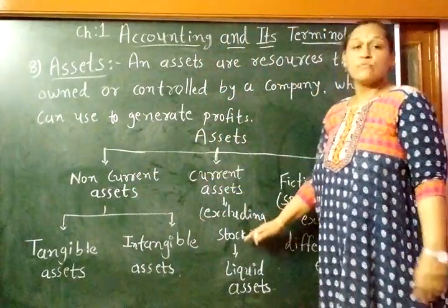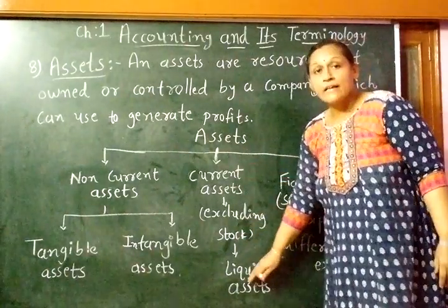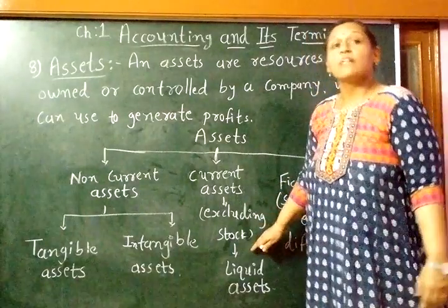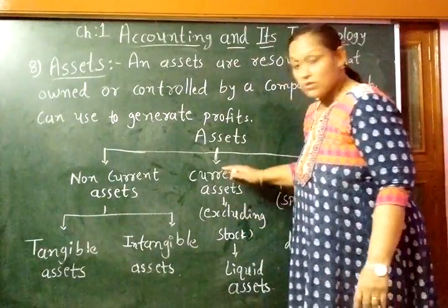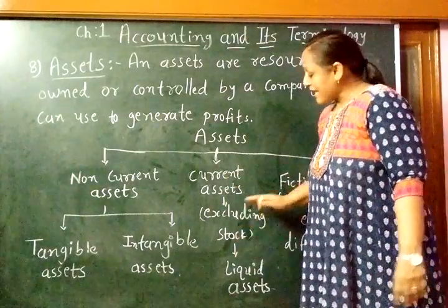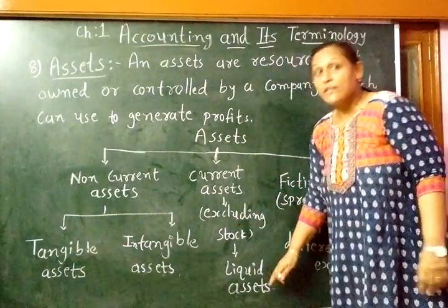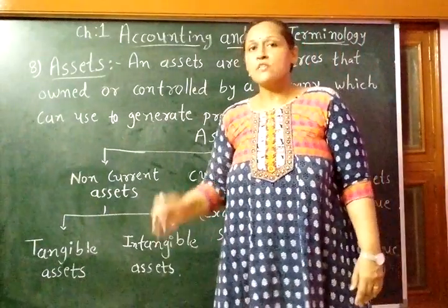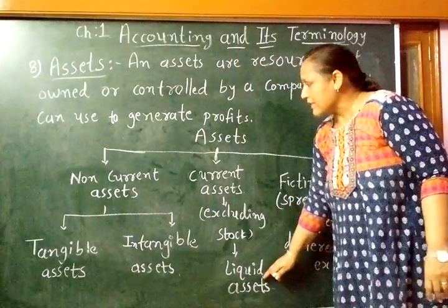From current assets, if we exclude stock, that is called liquid asset. Stock cannot be converted into money quickly, so the assets that can be converted into cash very quickly — after excluding stock from current assets — are called liquid assets.